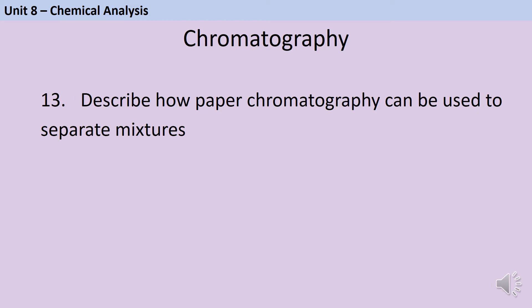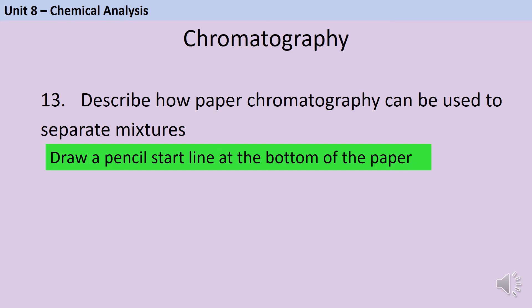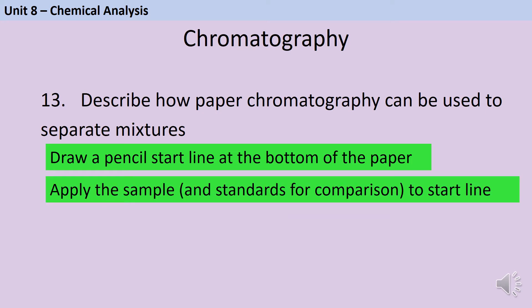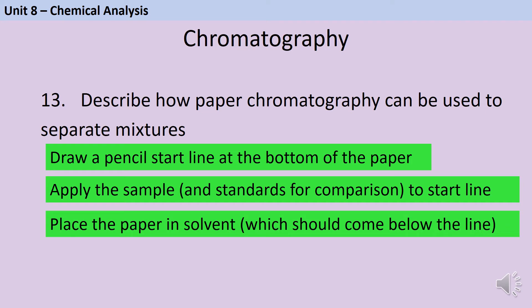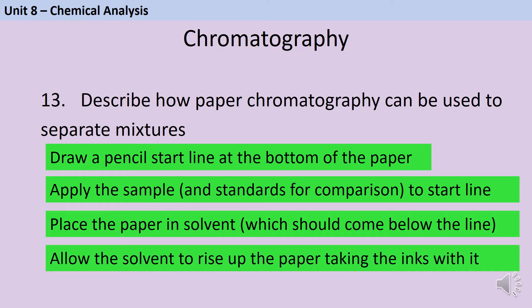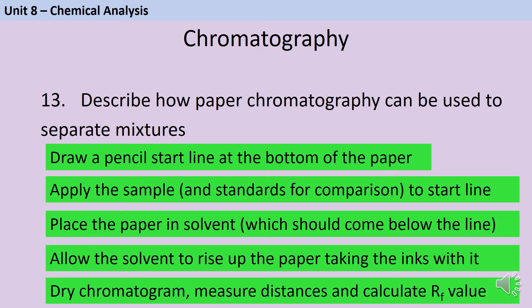The first step in setting up a paper chromatogram is to draw a start line at the bottom of the chromatography paper, and it's really important that this is drawn in pencil. You then need to apply the sample, and also the standards that you're going to compare it to, to the start line. Then you place the chromatography paper into the solvent, making sure that the solvent touches the bottom of the paper but not the start line. You need to wait for some time to allow the solvent to rise up the paper, taking the different inks with it. Once it's progressed far enough, you remove the chromatogram, dry it out, and then measure the distances and calculate the RF value.